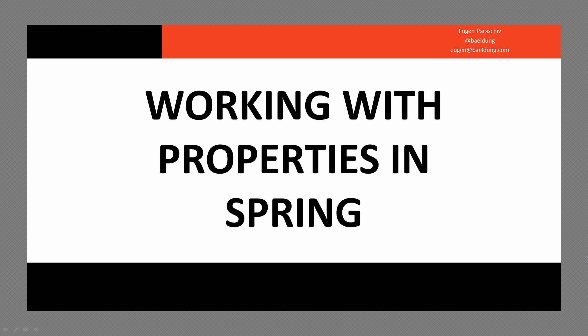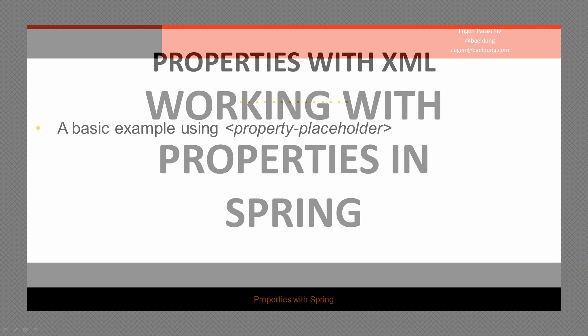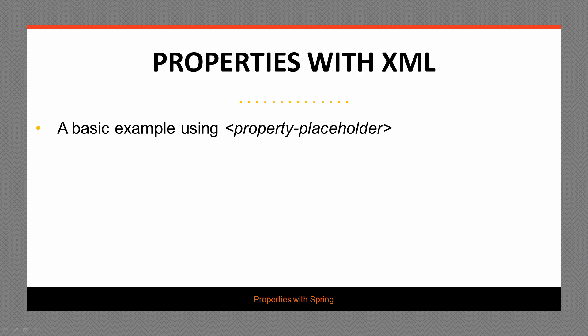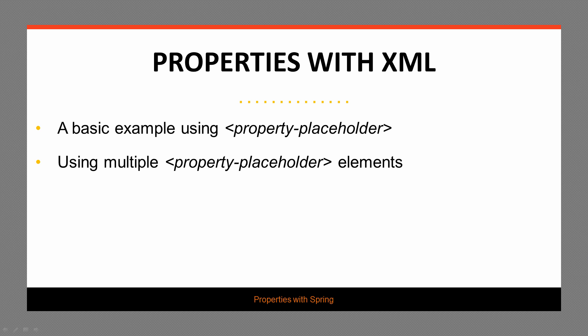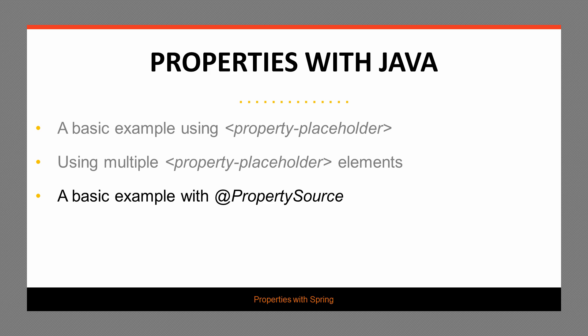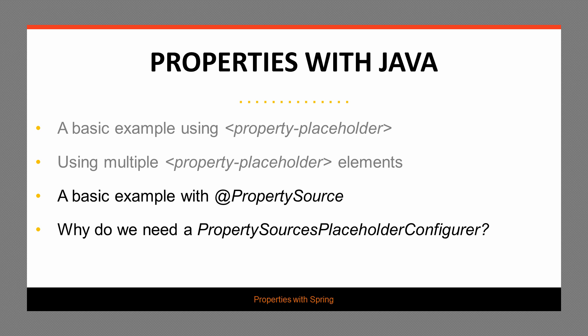In this video, we're going to be working with properties in a Spring project. We'll start by looking at how to work with these properties in XML using a simple example and the property placeholder. Then we'll use multiple property placeholder elements and look at how to determine the order between them. We'll then switch to a Java configuration and look at a basic example using the PropertySource annotation, and then see why we need the PropertySourcesPlaceholderConfigurer bean.